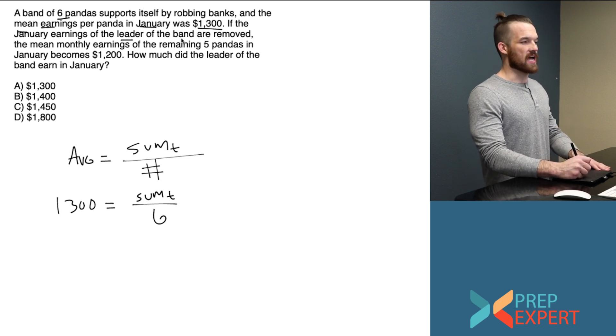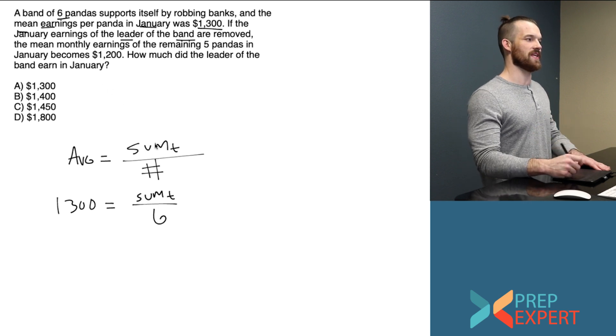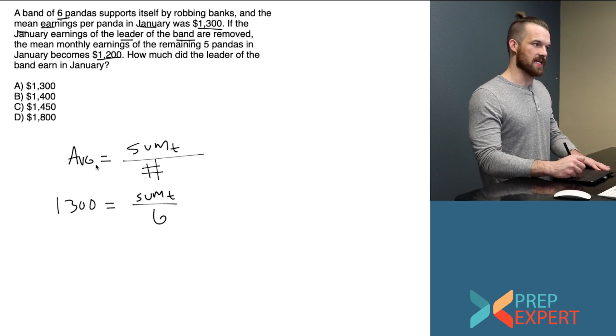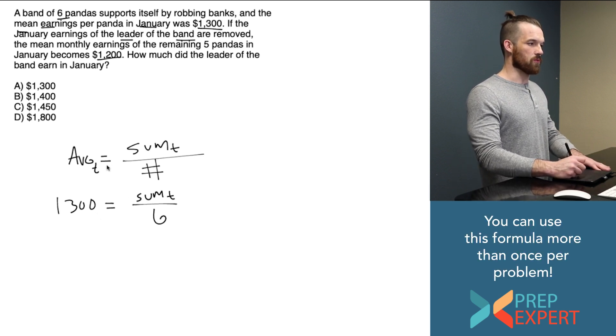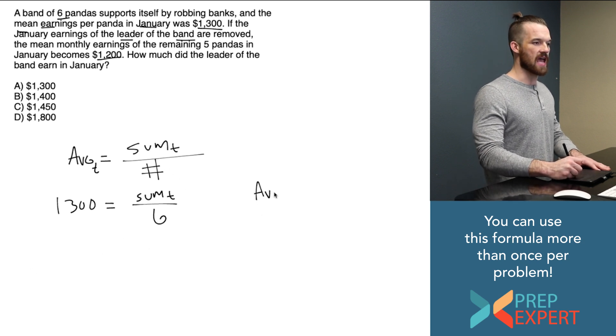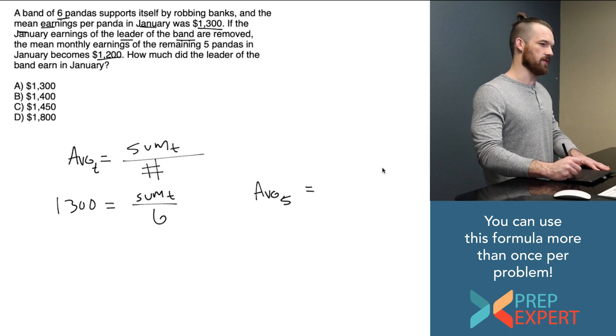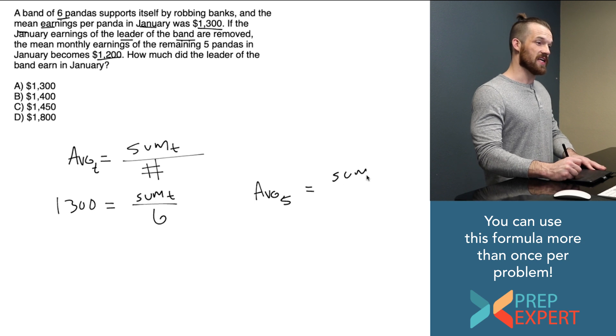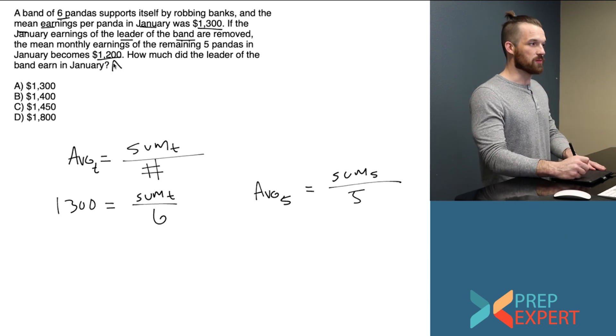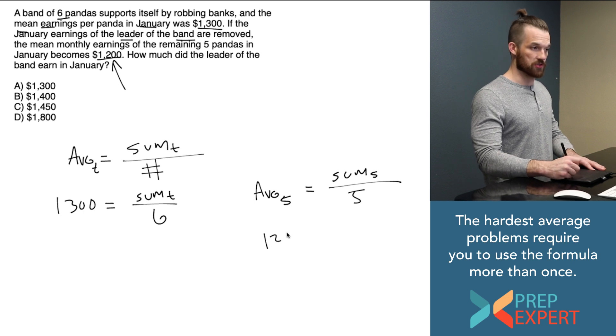Let's take a look at the rest of the problem. We now know that if you remove the leader of the band, if you remove his earnings or her earnings from the total earnings of the group, the average becomes $1,200. So let's write that down. So the average we found before was the average of everyone. The average total is the sum total over the number of numbers total. Now, let's find the average of the five pandas who are not the leader. We'll call that average sub-five. I think the average of the five pandas who aren't the leader is the sum earnings of the five pandas who are not the leader over the number five, which is how many pandas there are who are not the leader. And we can complete that formula. They tell us that that average is $1,200.